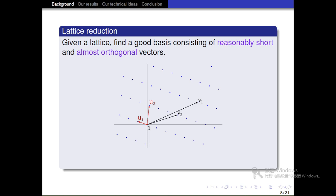Given a lattice, lattice reduction asks us to find a good basis consisting of reasonably short and almost orthogonal vectors. For example, in this figure, given a bad basis v1 and v2, we try to find a better basis u1 and u2. They are reasonably short and almost orthogonal to each other.